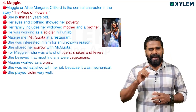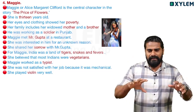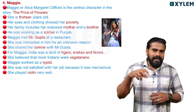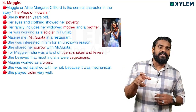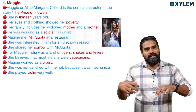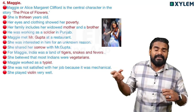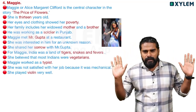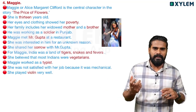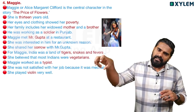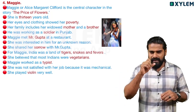For character sketch writing: one heading, introduce the chapter and the story, then character physical appearance, then character traits and qualities — three to four character qualities. Look at all the details carefully.